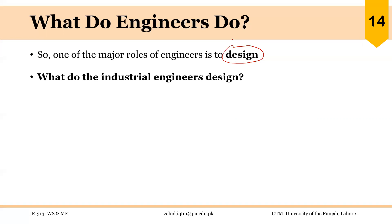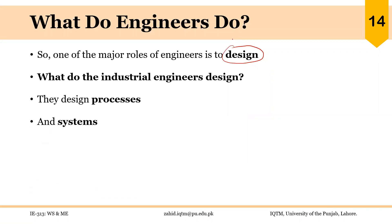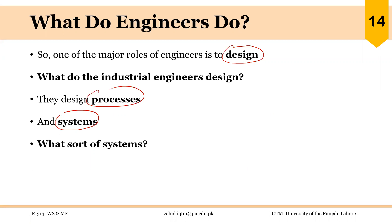So the question here is: what do industrial engineers design? The answer is that the main goal of industrial engineers is to design processes and systems — specifically industrial work systems, or simply work systems.